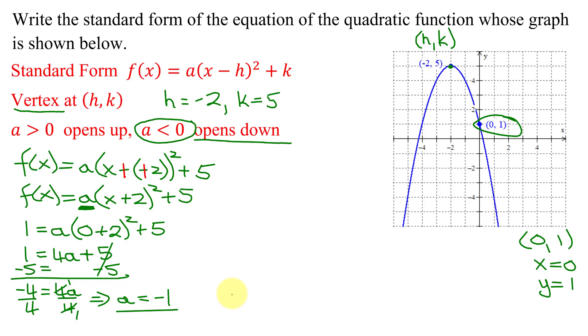So I now know the equation of my quadratic function in standard form is f of x equals negative 1. We never write negative 1. We just write negative times the quantity (x plus 2) squared plus 5.